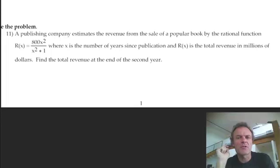So, publishing company estimates revenue, rational function, that there. Remember, you can still think of this as y equals 800x squared over x squared plus 1, but r is the revenue. And it's the revenue when you put some value of x in there, hence the rx. I know sometimes you see f of x, this is like r of x, so we're doing it for revenue.